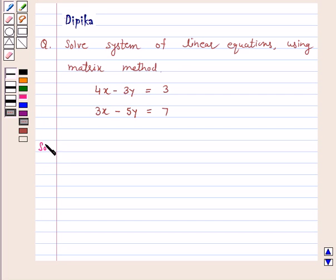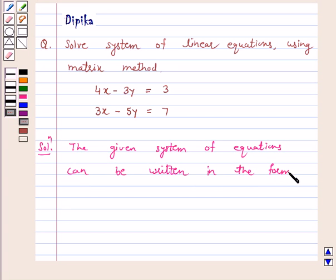Solution. The given system of equations can be written in the form AX is equal to B where